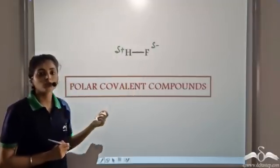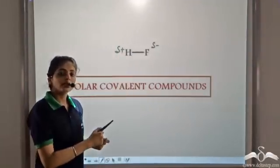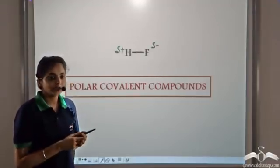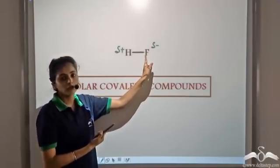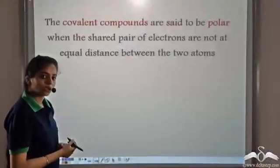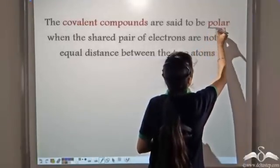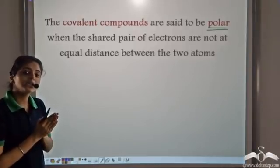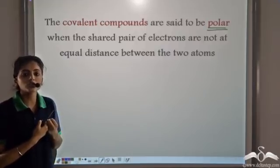such covalent compounds are known as polar covalent compounds, as they lead to the formation of poles. Whenever there are two different kinds of atoms forming a covalent compound, depending upon the electronegativity, one atom tends to attract the shared pair of electrons more towards itself. Fluorine gets a slightly negative charge and hydrogen gets a slightly positive charge. So the covalent compounds are said to be polar only when the shared pair of electrons are not at equal distances between the two atoms.